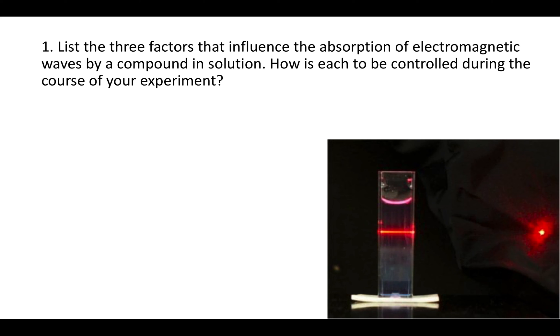One is the solvent. Different solvents absorb a different amount of light and so that will make your baseline absorption different. So we're going to control that in this experiment by keeping the solvent the same for every measurement.